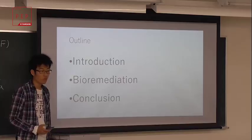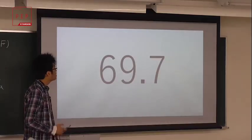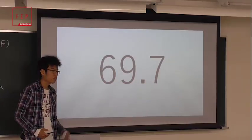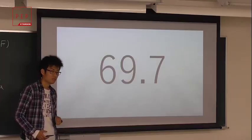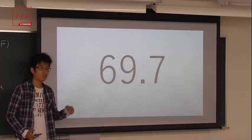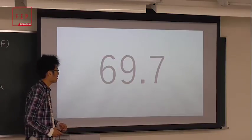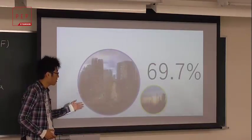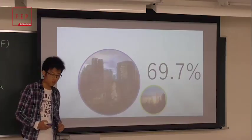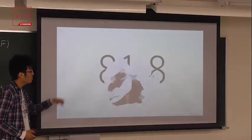So first, let me start with a question. 69.7. Can anyone guess what this number means? I assume no one knows. This number represents the percentage of respondents who answered that we cannot live on the earth in the future. Okay, how about this number?